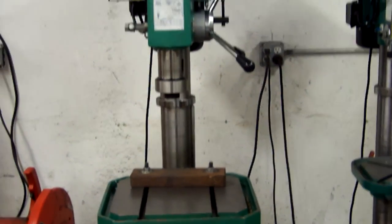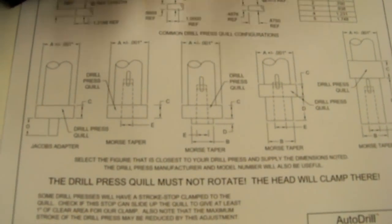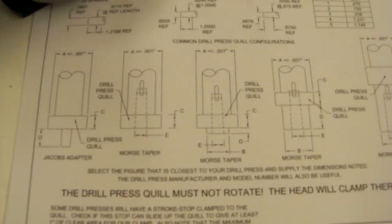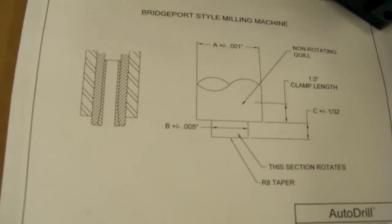Once the key chuck is removed, you will then follow the PDF form that we'll send in an email for your machine. This is an example of different configurations of drill presses, such as Clausings, Grizzlies, and Deltas. Over here, you'll see a different PDF for Bridgeport milling machine styles with RA tapers.